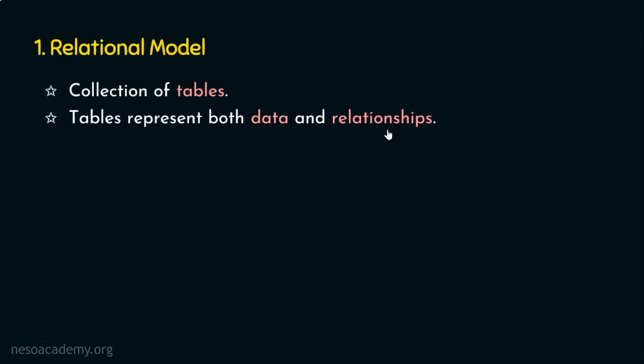Let's say we have two tables: one is the student table and the other is the instructor table. The student table contains information about the student, and the instructor table stores data about the instructors. Now, student and instructor are somehow related, and the relationship is also a table in this case. So in the relational model, everything is tables — the data are stored in a table and the relationships are also represented in the form of tables.